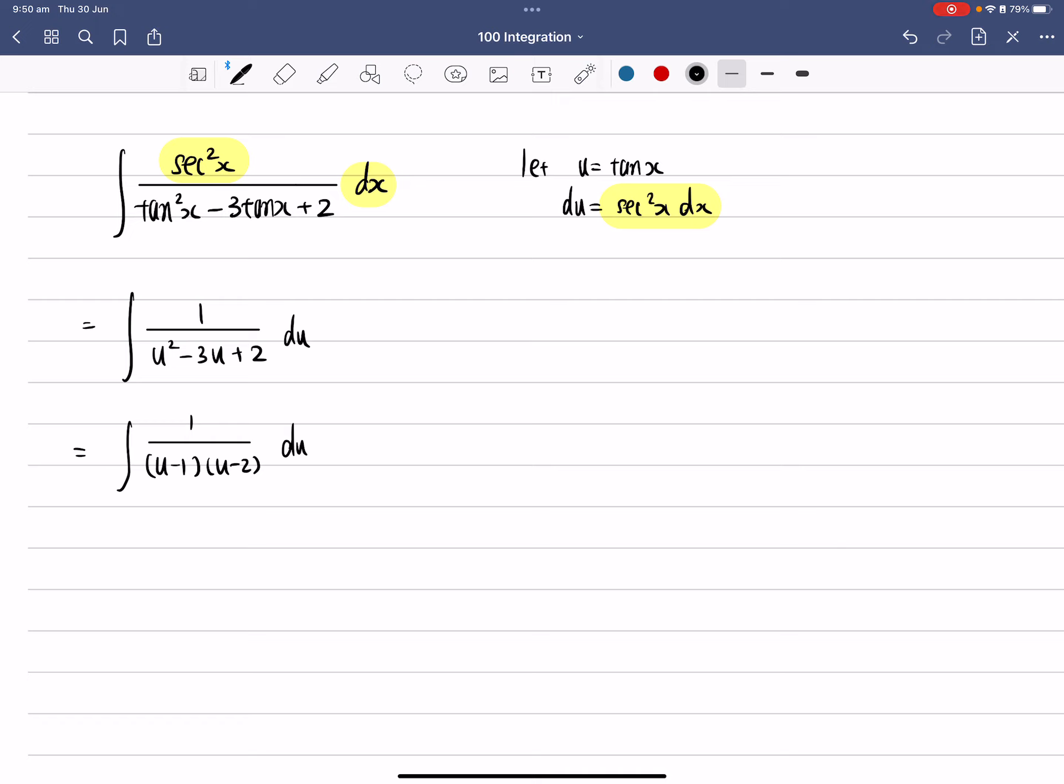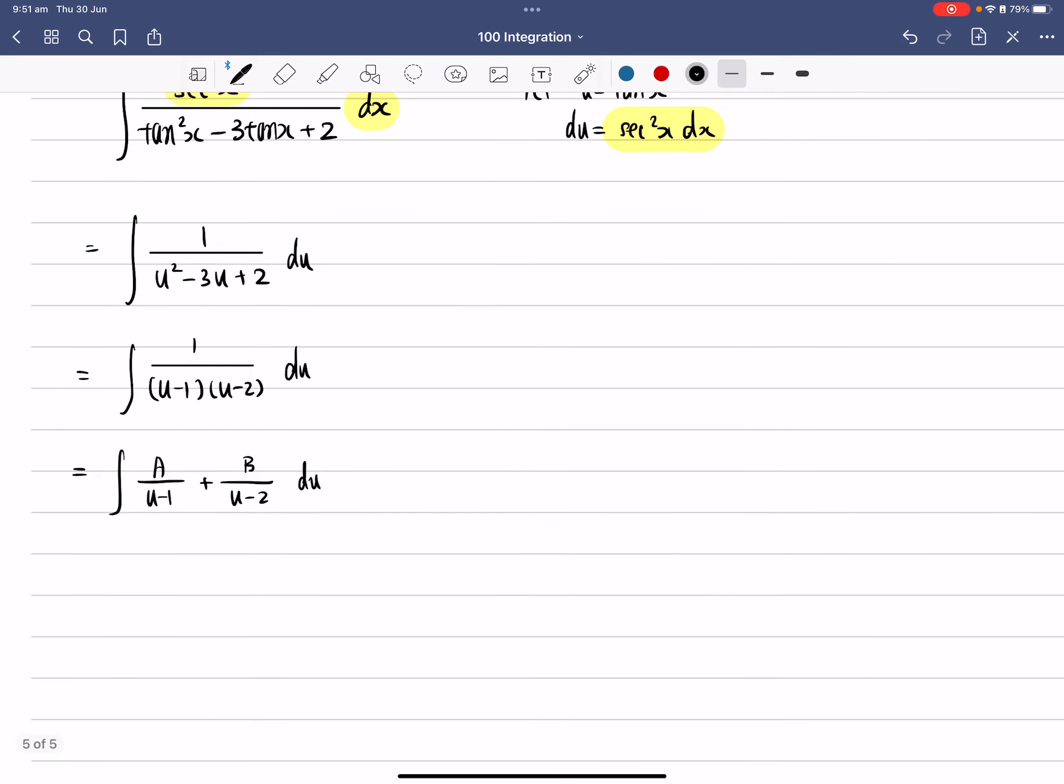Alright, so once you factorize into u - 1 and u - 2, it becomes a partial fraction question. Okay, so we can do something like, and we can let this one to be A over (u - 1) plus B over (u - 2) and du. And we start the process of finding A and B.